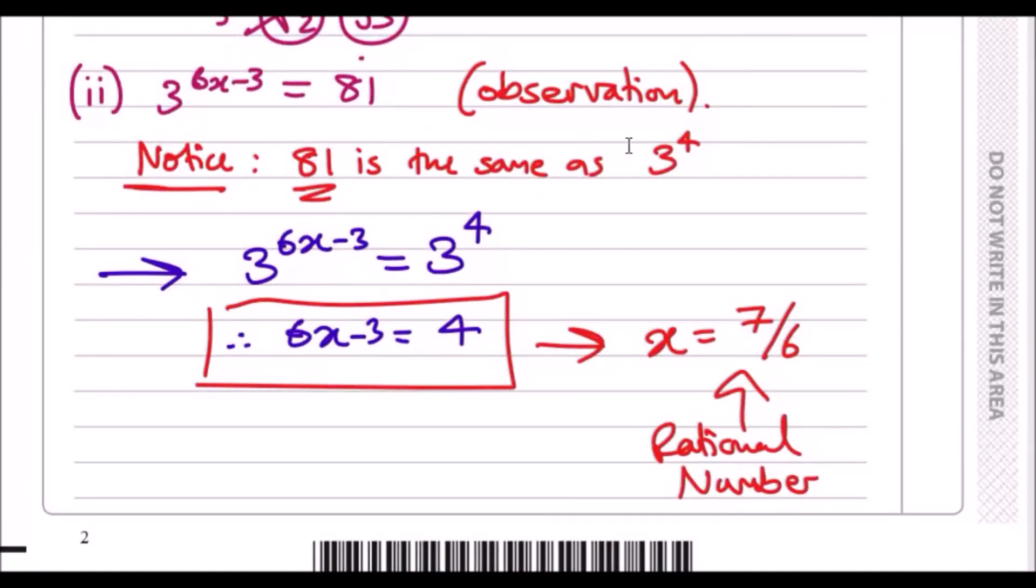This is just observation skills. Once you do this, it's easy maths. Just plus 3 across, you get 7. Divide by 6, you get 7 over 6. That's it, all done.